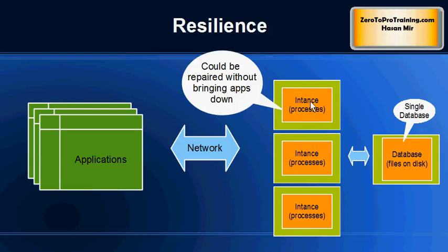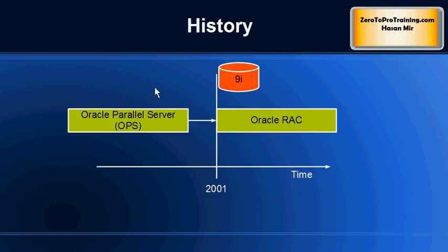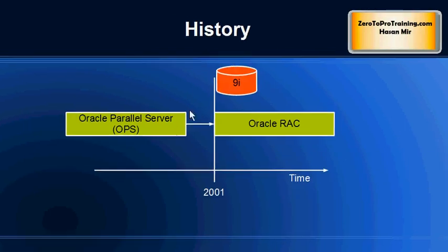Resilience comes from the fact that if something goes wrong with one of the machines, it can be taken down without bringing down the whole environment. The application will still be running and can talk to other machines running Oracle software. One machine can be brought down and fixed while others continue running. This also means patching is easier — you can apply one patch at a time to machines running Oracle software without bringing the whole system down.